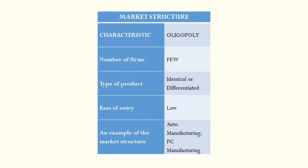We've made it to our fourth and final market structure: oligopoly. If you've brushed up on your Greek, 'oligo' means 'a few,' and the '-poly' part comes from a word meaning 'selling.' So the word really does mean 'a few sellers.'